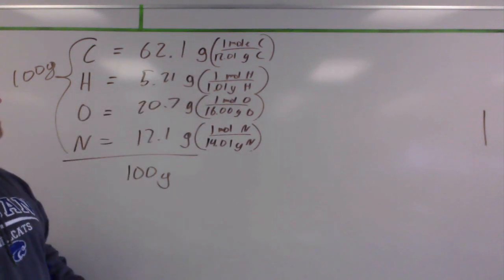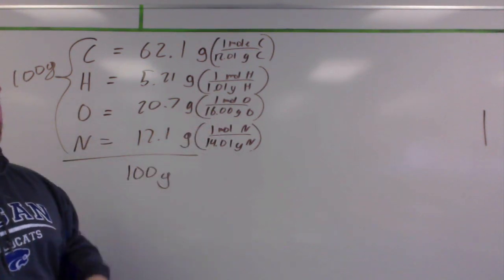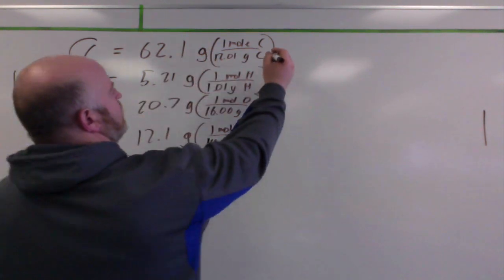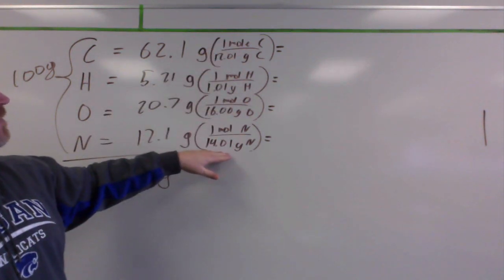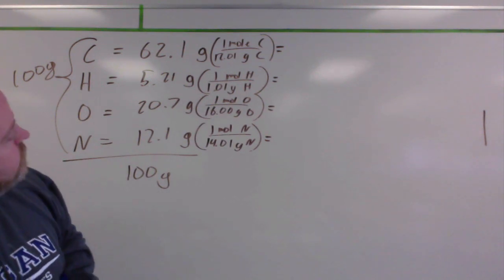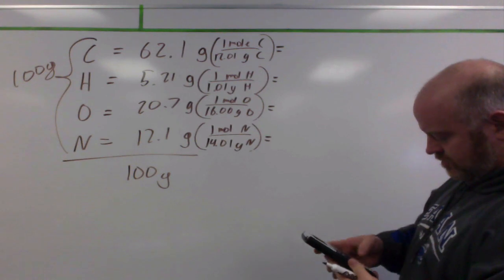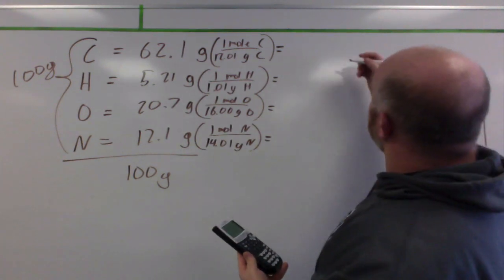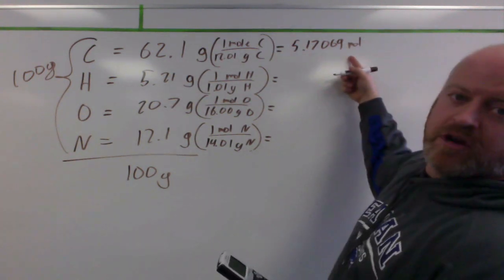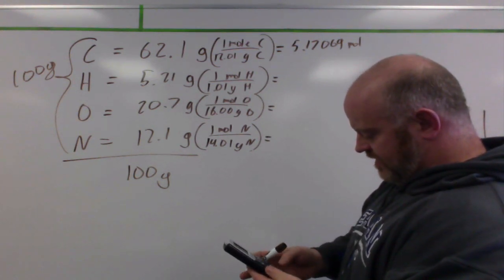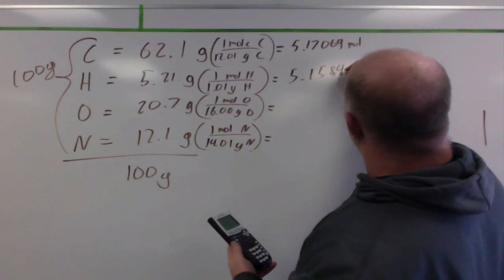Looking these values up on the periodic table. Now, we're not going to use 32 here or 28 here because these are not diatomics in this scenario because they're part of a compound. So we just use their individual masses there. From this, we then calculate basically a mole ratio between these compounds. So we went from a gram ratio by doing stoichiometry. We can now get a mole ratio instead. So the 62.1 divided by your 12.01, and I get 5.17069 moles. Now, I'm not rounding this number off yet because we're not done with it. 5.21 divided by 1.01 should be close to 5.2-ish. It's actually 5.1584 moles.